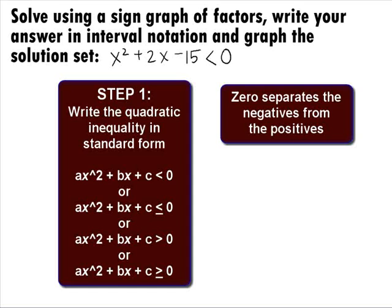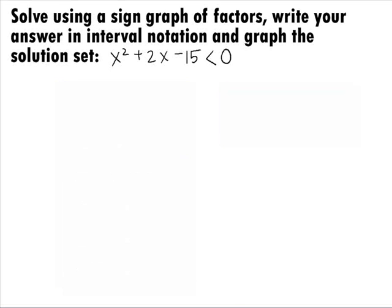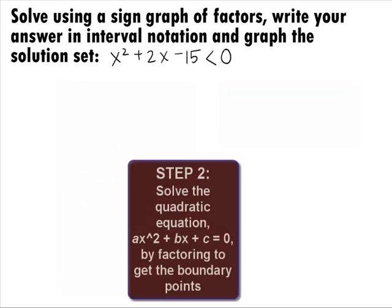With this technique, we will be looking at the sign of a number to determine if it's a solution or not. This inequality is already in standard form. In Step 2, we want to set up what we found in Step 1 as a quadratic equation and solve it by factoring to get the boundary points.